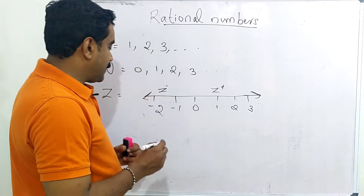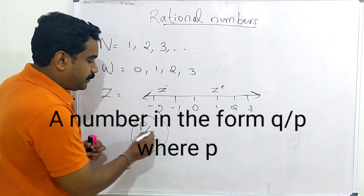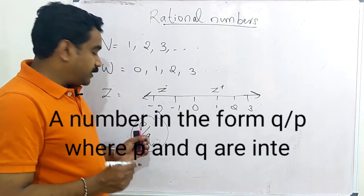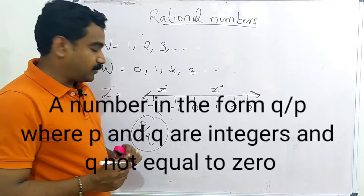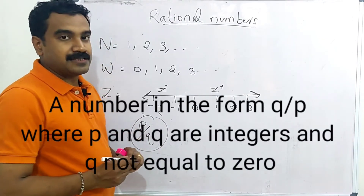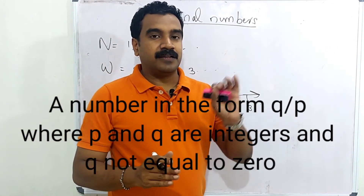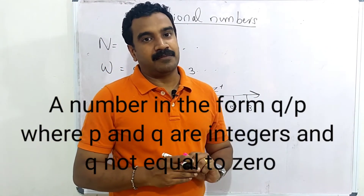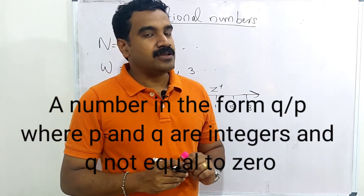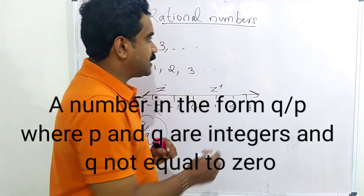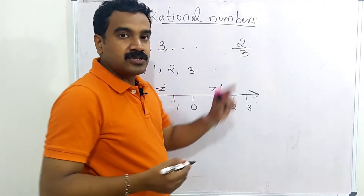What is a rational number? A number in the form P by Q, where P and Q are integers and Q is not equal to 0, is known as a rational number. That is, one number divided by another number where both numbers are integers and the denominator is not equal to 0. For example, 2 by 3 is a rational number because 2 and 3 are integers.